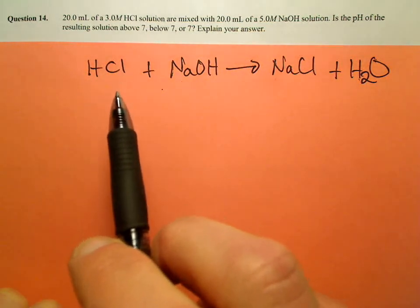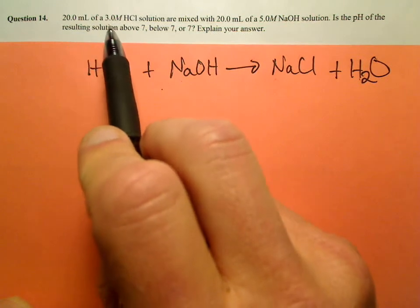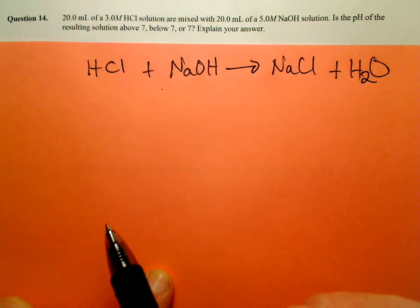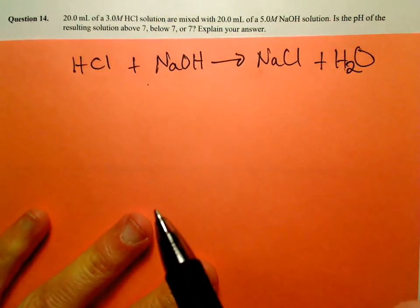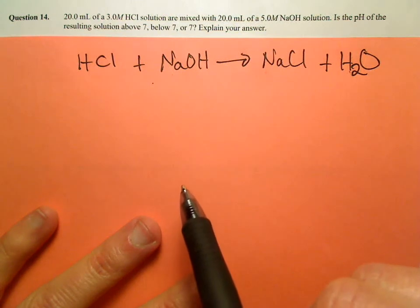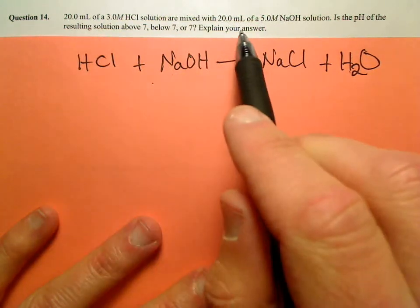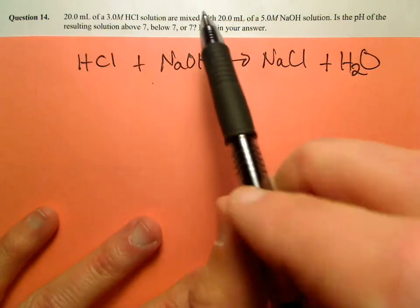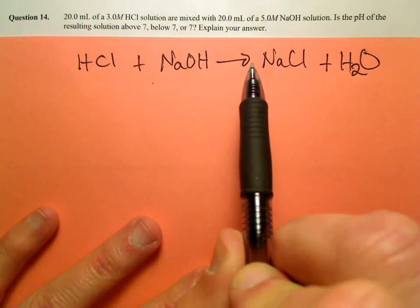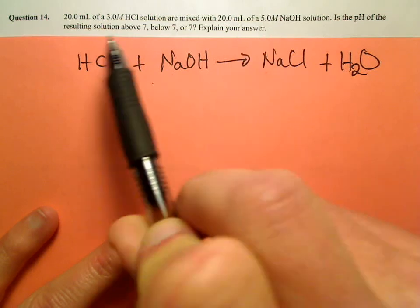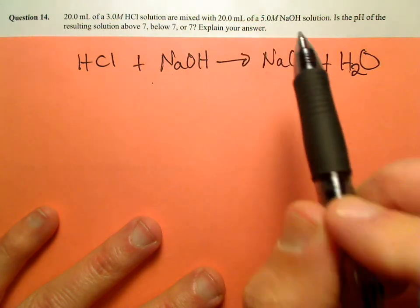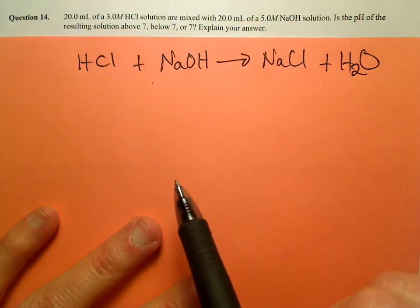Which have we added more moles of? 20 milliliters of a 3 molar solution for HCl, or 20 milliliters of a 5 molar sodium hydroxide solution? We've added more moles of hydroxide ion than HCl. The volumes are the same — 20 and 20 — but the concentration of the sodium hydroxide is 5.0, so there are more moles of sodium hydroxide added.